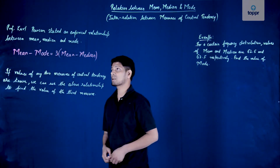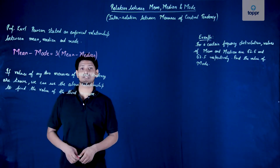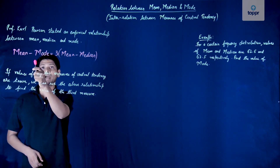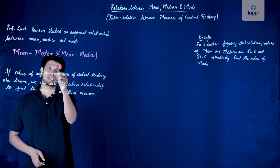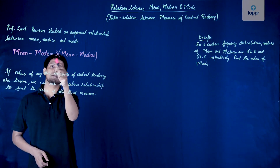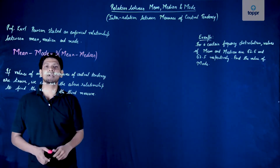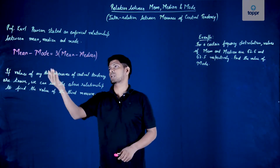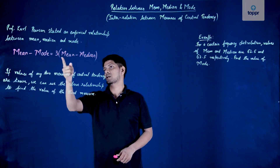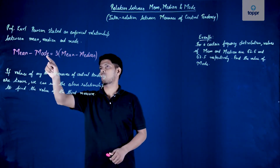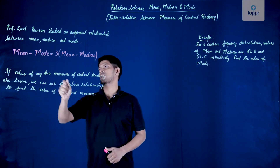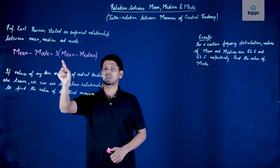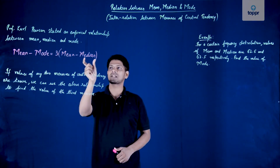The empirical relationship or the interrelationship between the measures of central tendency is: mean minus mode is equal to three multiplied by mean minus median. This formula gives the interrelation between all three measures of central tendency — mean, mode and median.